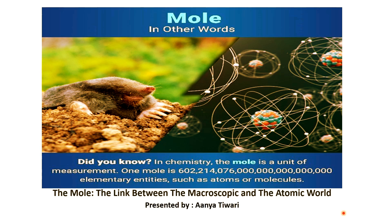Scientists sometimes abbreviate this as 6.02 times 10 to the 23rd. Chemists use moles when calculating reagents for a chemical reaction, or determining concentrations of a solution. Similar to how a recipe requires specific amounts of each ingredient, reaction protocols call for specific ratios of each reagent, and using moles allows chemists to directly determine that ratio.